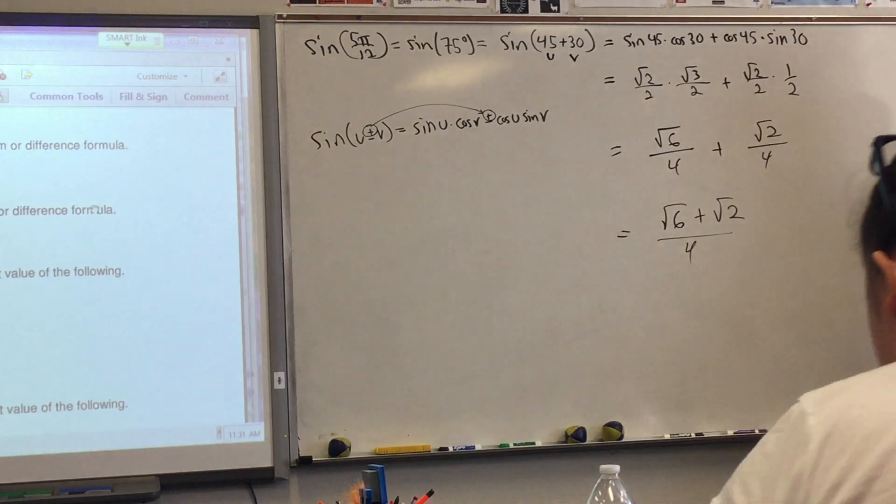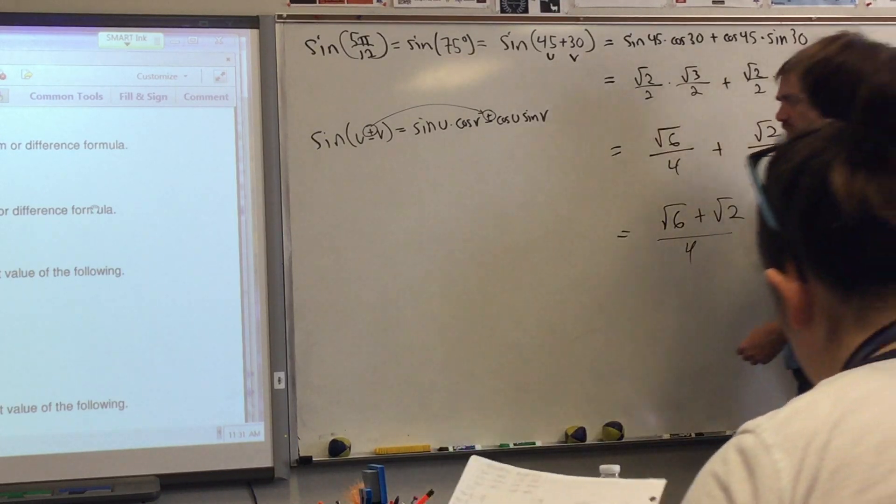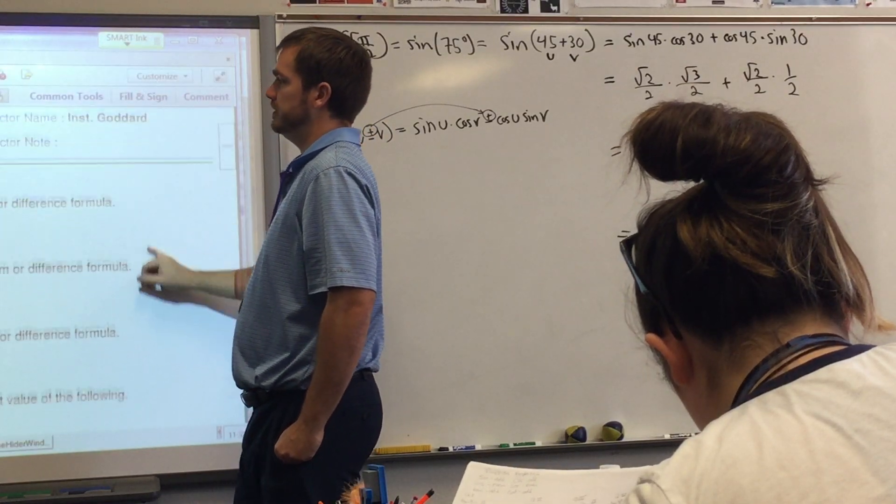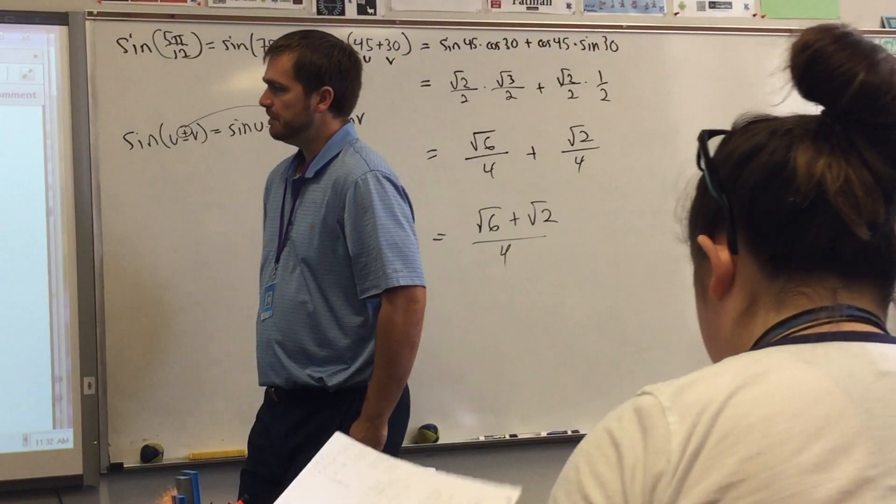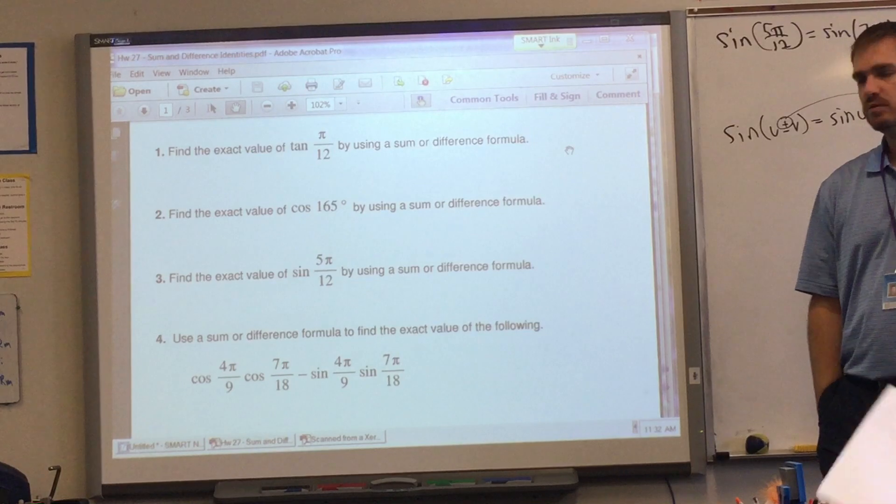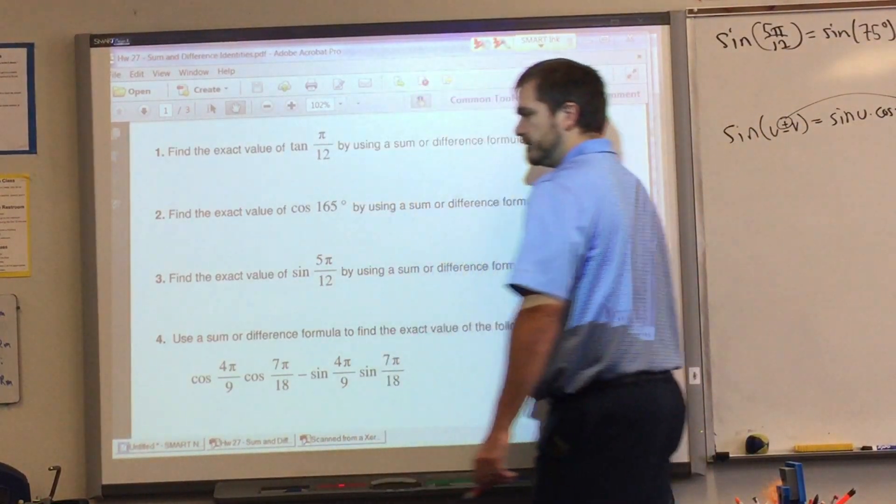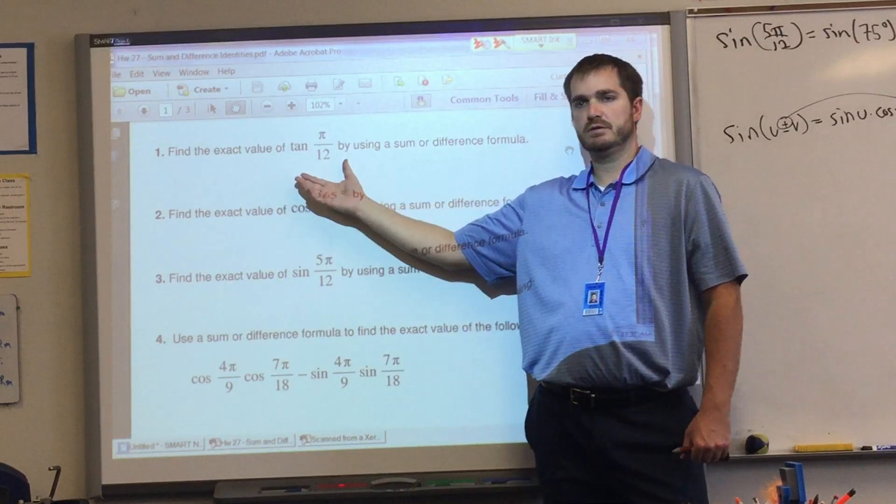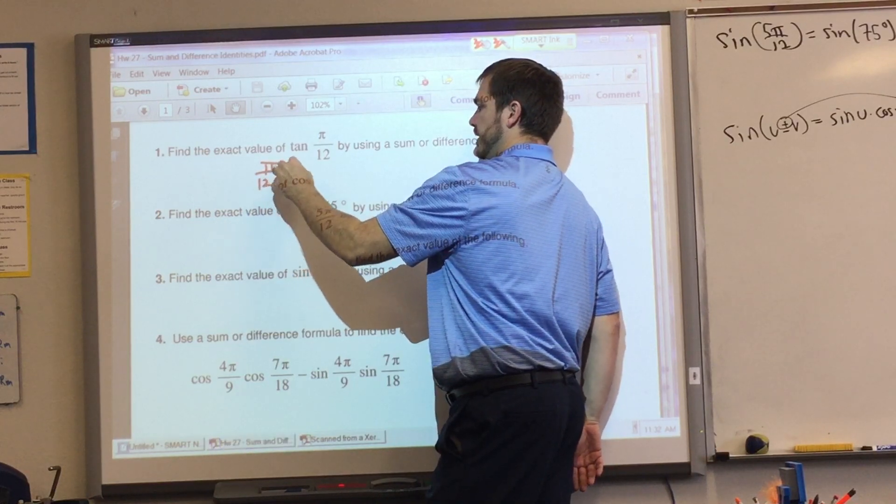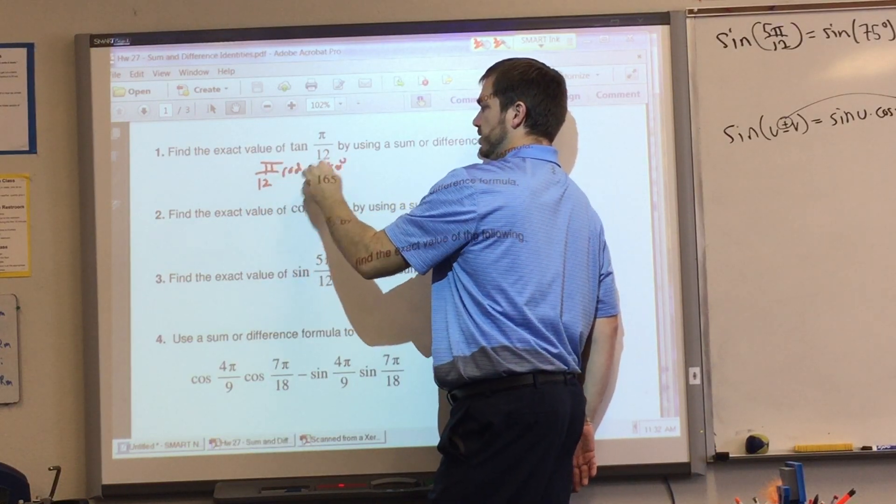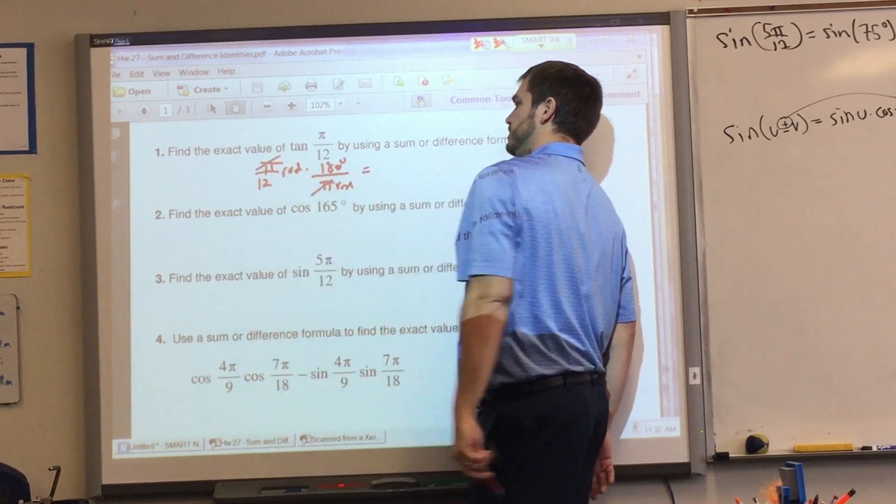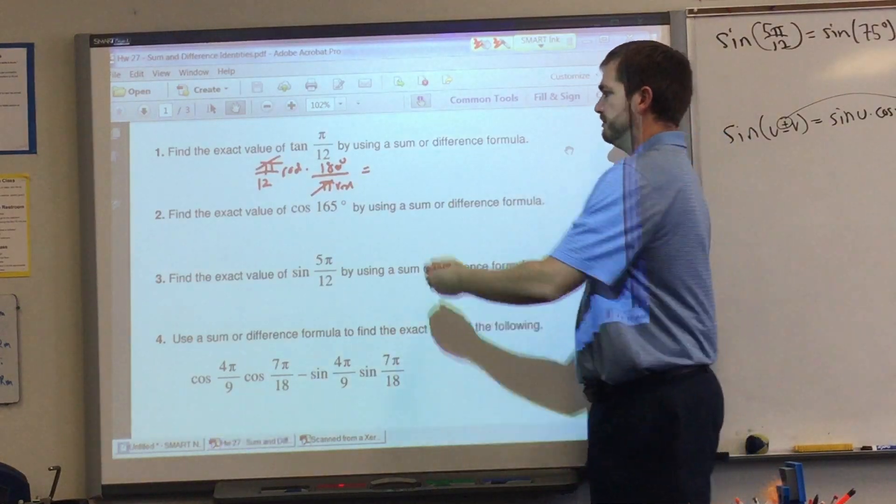Alright, any questions class? Alright, let's try a tricky one over here, number 1. Tangent of π over 12. Find that by using a sum or a difference formula. Somebody tell me, what's the first thing we think we're going to do here? Put in degrees. So π over 12 radians times 180 degrees over π radians. Multiplied so this cancels, so 180 over 12, 15 degrees.